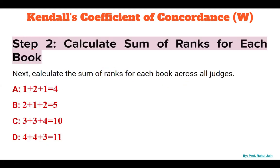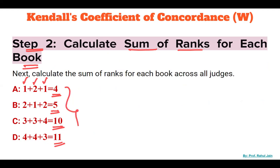Step 2: Calculate the sum of ranks for each book across all judges. For Book A: ranks are 1, 2, 1 — sum = 4. For Book B: sum = 5. For Book C: sum = 10. For Book D: sum = 11. These are the sum of ranks of each book across all three judges.